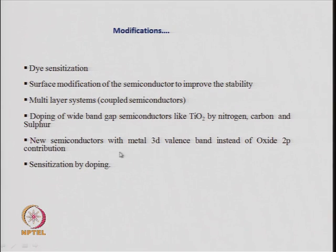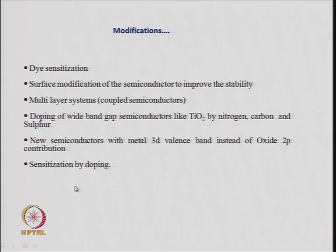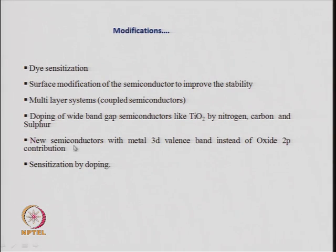Several semiconductors with metal 3d valence band contributions can be used — instead of oxygen 2p, you can use sulfur, giving a sulfide band overlapping with the metal band. Other than metal oxides, the band gap generally decreases when you change an oxide to a sulfide. Several modifications can lead to very high enhancements in the photocatalytic efficiency of water splitting.